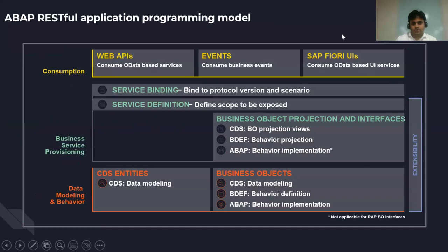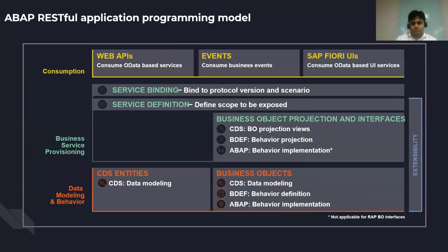Now let's look at the ABAP RESTful Application Programming Model. It basically consists of three different layers. The first is the data model and behavior. The data model is where you model the business objects — for example, a sales order with a header and items, including their relationships. All of this is done at the data model layer.